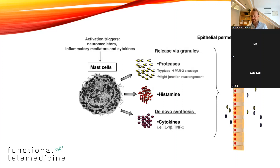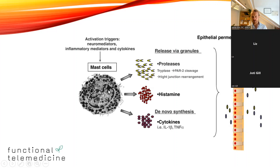A lot of our immune system sits in this location because it's picking up potentially dangerous or damaging things coming into us from the environment. In this example, we have the gut wall, and inside the intestine is where food and bacteria are located. On the inside of that wall, we have a lot of our immune system sitting, including the mast cell. What we traditionally all focus on is its involvement with histamine.